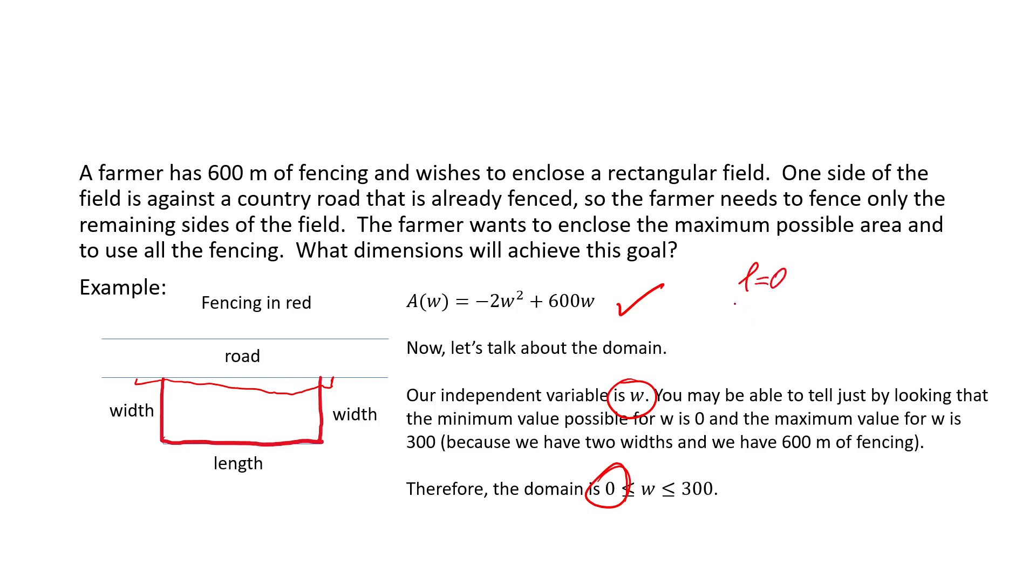If we did that, we could use our formula that said L plus 2W is 600. If we subbed in a length of zero, we'd say zero plus 2W is 600, which means W would be 300. So letting our length be its minimum value of virtually zero, we see that our width would be its maximum value of 300. So we're going to let our domain be zero less than or equal to W, less than or equal to 300.